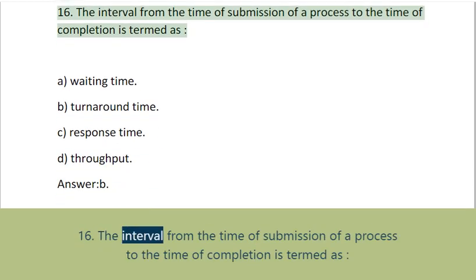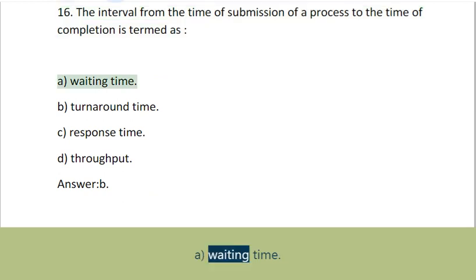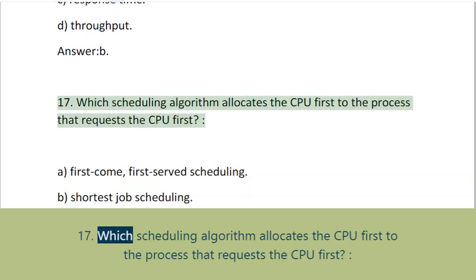Question 16: The interval from the time of submission of a process to the time of completion is termed as: A. Waiting time, B. Turnaround time, C. Response time, D. Throughput. Answer: B.